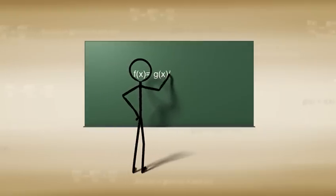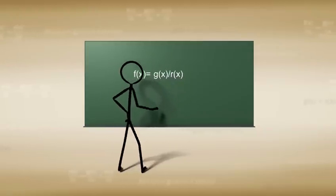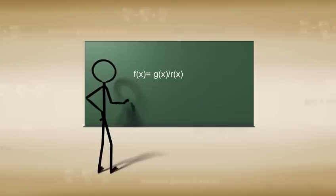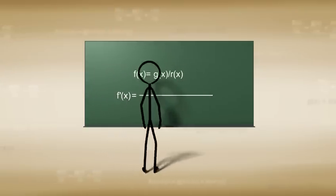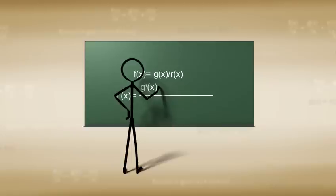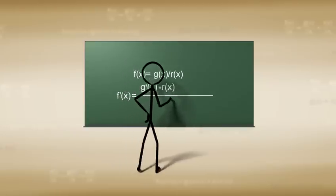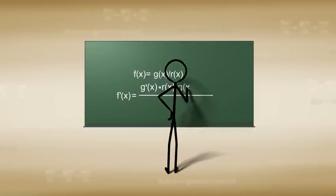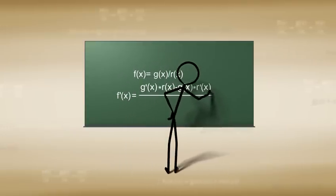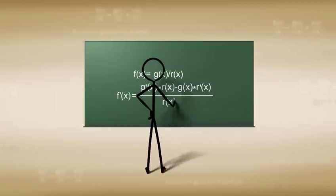Finally, it can be concluded that if f is equal to g over r, then f prime x is equal to g prime x times r minus g of x times r prime x all of that over r of x squared.